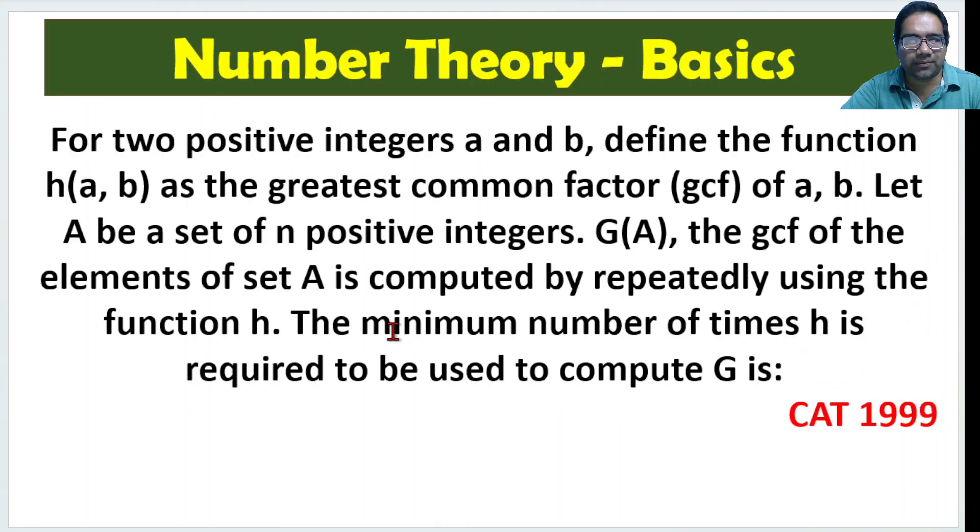Here, there is another problem which is pretty straightforward, but it is verbose, like general CAT problems. For two positive integers a and b, define the function h as the greatest common factor of a, b. Let A be a set of n positive integers. g of A is the GCF of elements of set A computed repeatedly using the function h. The minimum number of times h is required to be used to compute this g.